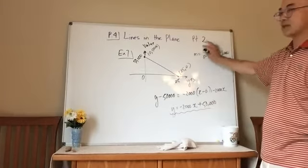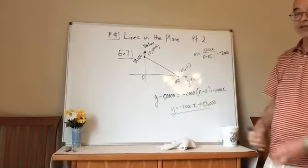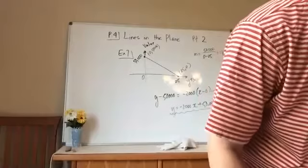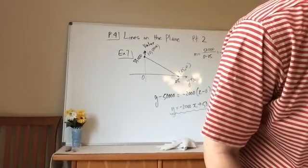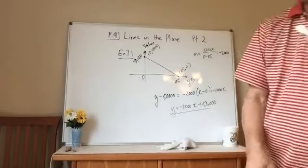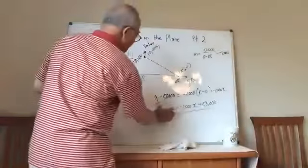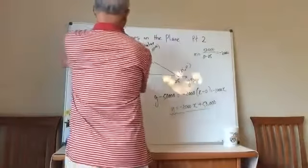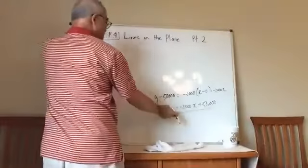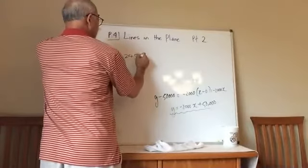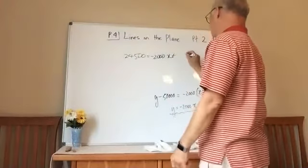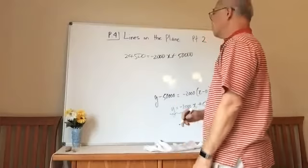Another way to do it is try to understand what we're doing here. It says it depreciates $2,000 per year. So that kind of gives you the slope. It's negative 2,000 because it's depreciating. It's going down. And it starts at this value. So I can conceptually say that it starts at this value. I know what this is, so I can go right here and get the same thing. In other words, I didn't have to do this. I figured this out just conceptually reading the question.